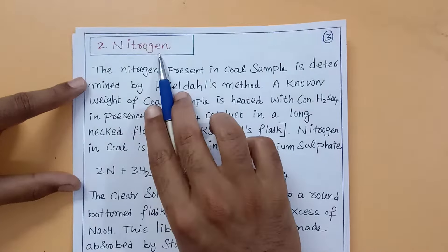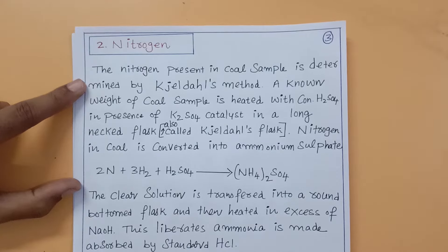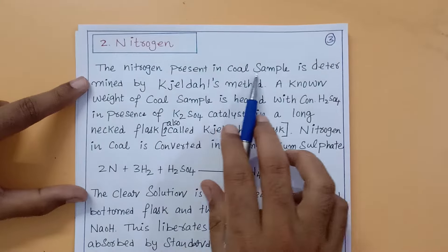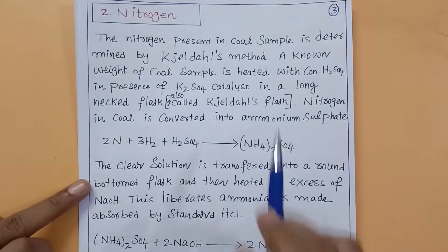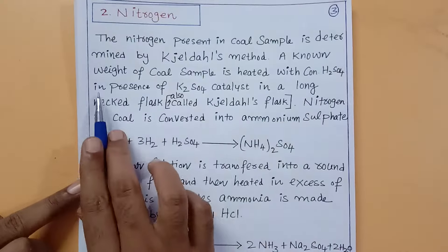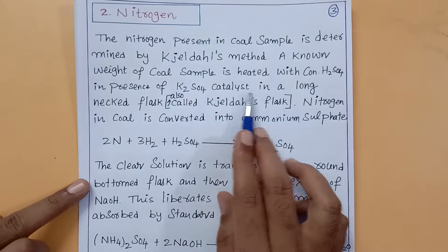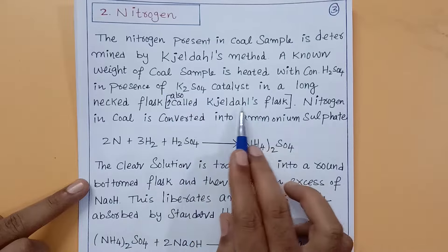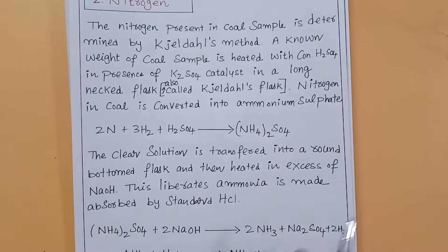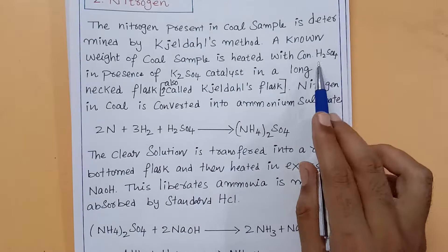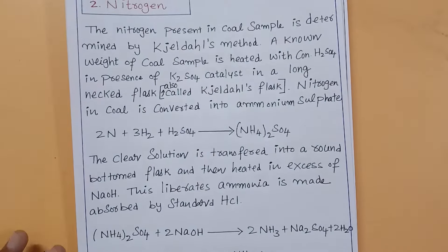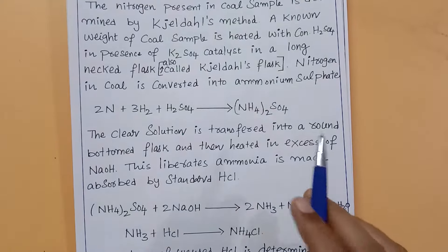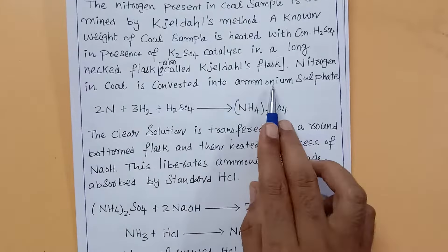The second element in coal is nitrogen. The nitrogen present in the coal sample is determined by Kjeldahl's method. In this method, coal is heated with concentrated H2SO4 in the presence of potassium sulfate catalyst in a long-necked flask, also called Kjeldahl's flask. The heating causes the nitrogen in coal to convert into ammonium sulfate.